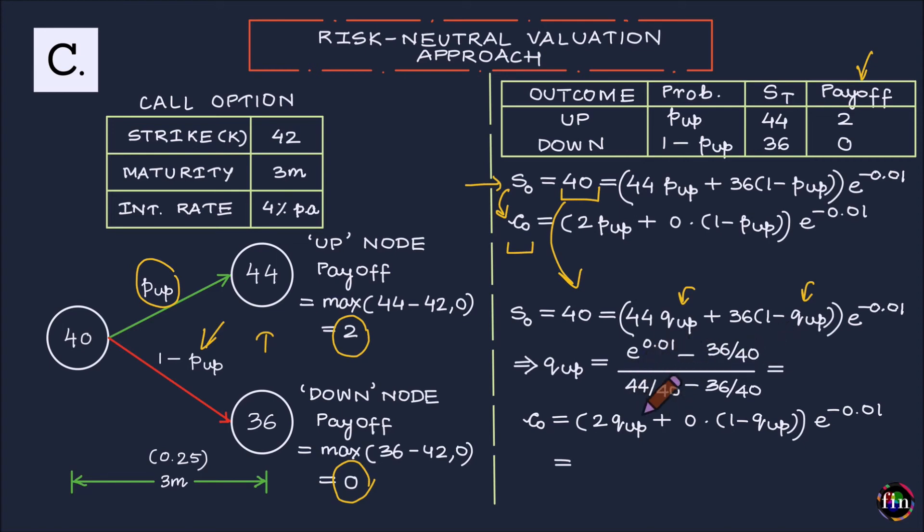Then, this is the multiplicative factor which I multiply my current stock price with to arrive at the stock price in my up node. So that minus this multiplicative factor in the denominator. This is the template of Q up which I want you to remember.